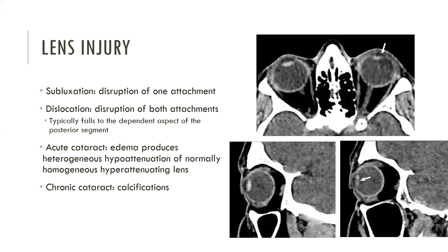Blunt and penetrating injuries to the globe may result in a traumatic cataract, which manifests on clinical exam as lens opacification. In the acute setting, the natural crystalline lens becomes edematous, producing regions of decreased attenuation within the normally hyperattenuating lens on CT. In the chronic setting, calcifications may be seen within the traumatized lens. Here we have a patient with an acute traumatic cataract of the left lens, with heterogeneous hypoattenuation and slight loss in anterior chamber volume.